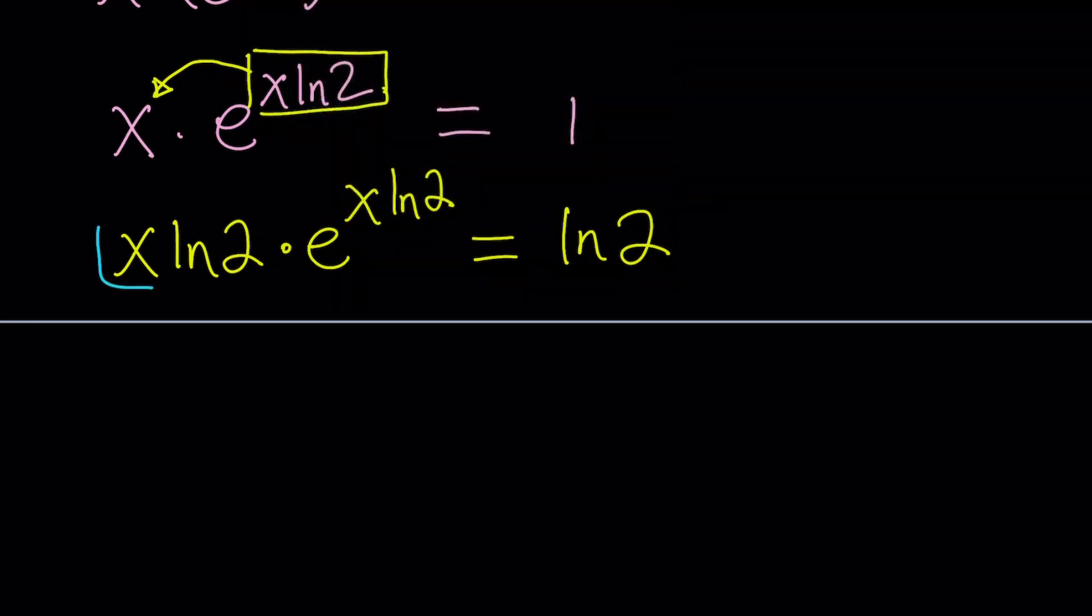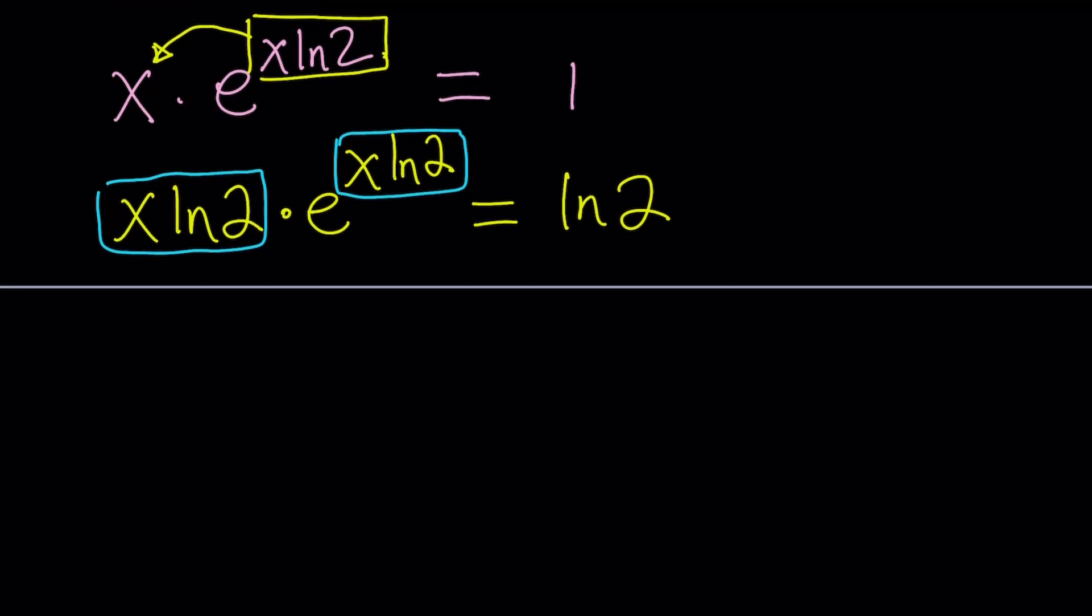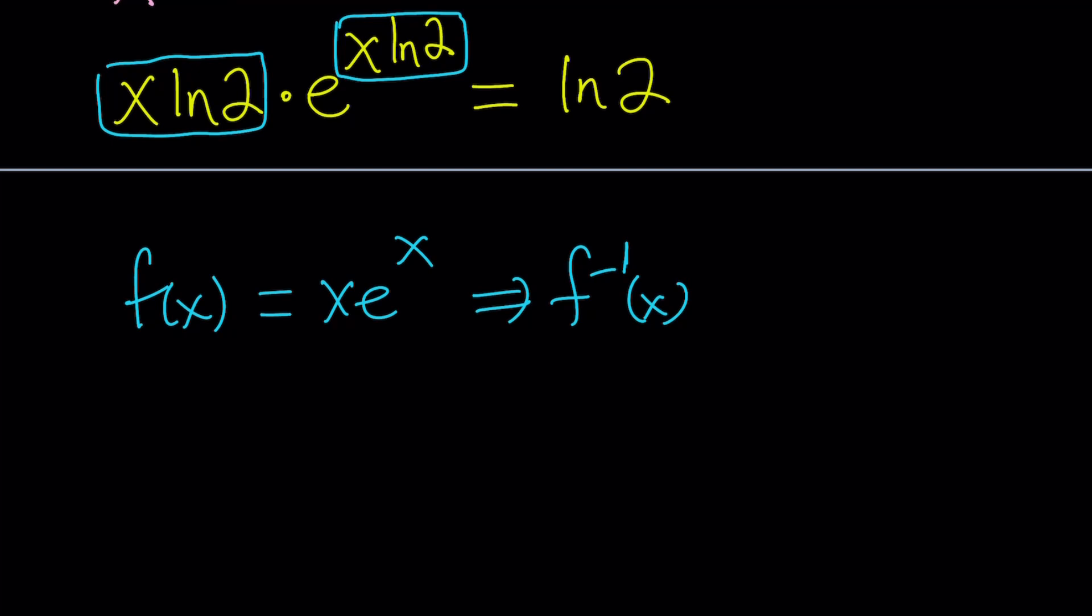So now, we're going to work off of a very special function, which is called Lambert's W function. Lambert's W function is basically the functional inverse of f of x equals x times e to the power x. So if f of x is defined as this, it's inverse, and obviously there's more than one inverse depending on what interval you're looking at. That gives you multiple branches, and let's not even get into the complex branches.